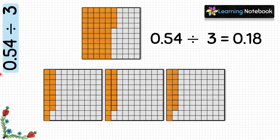The answer will be the number of tenths and number of hundredths in each group, which is 0.18. So 0.54 divided by 3 equals 0.18.